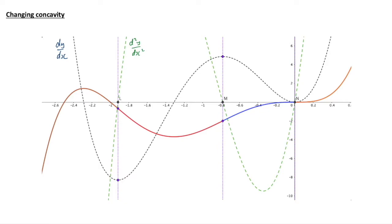That corresponds to the points where we have changes of concavity — the purple points — between the brown and the red, then the red and the blue, and the blue and the orange. We also notice that the second derivative must be changing sign at these points.